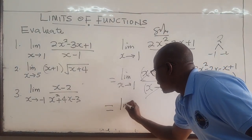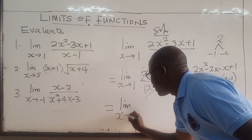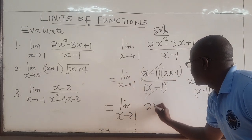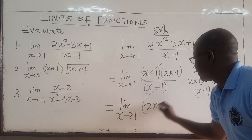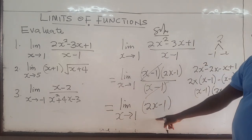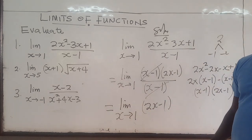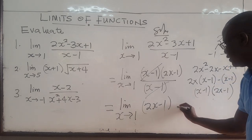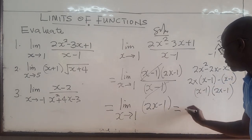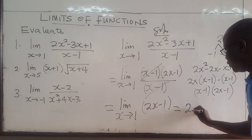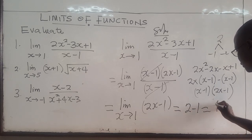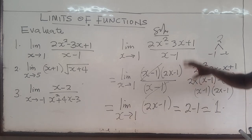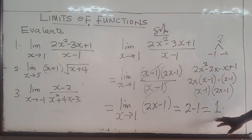So now this is equal to the limit as x approaches 1 of just 2x minus 1. This is linear, so you can just plug x in. This gives you 2 times 1 is 2, minus 1 is equal to 1. So the limit as x approaches 1 of this expression is equal to 1.